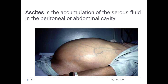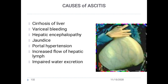Good afternoon students. Now we are going to discuss about ascites. The picture shows an enlarged abdomen with visible venous circulation or veins which are also palpable by hands. This condition is called ascites. The definition is: it is the accumulation of serous fluid in the peritoneal or abdominal cavity.